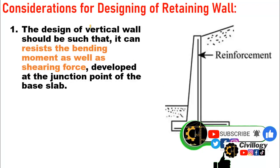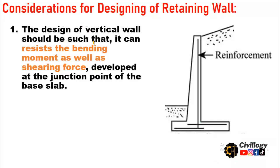Consideration one: The design of the vertical wall should be such that it can resist the bending moment as well as the shear force developed at the junction point of the vertical wall and the base slab.